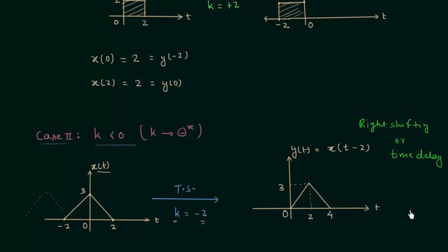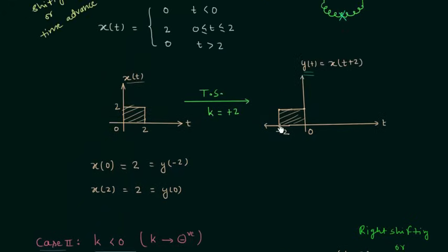Advancing the signal is not possible in real time. If we talk about case number 1, there is advancement in the signal, but advancing is only possible when the signal is recorded — we can advance a signal only when we have the recorded signal or have prior knowledge of it. So in real time we cannot advance the signal. This is all for this lecture; if you have any doubt you may ask in the comment section.